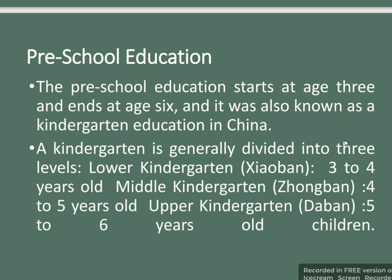Pre-school education starts at age 3 and ends at age 6, also known as kindergarten education in China. A kindergarten is generally divided into three levels: lower kindergarten for ages 3 to 4, middle kindergarten for ages 4 to 5, and upper kindergarten for ages 5 to 6.